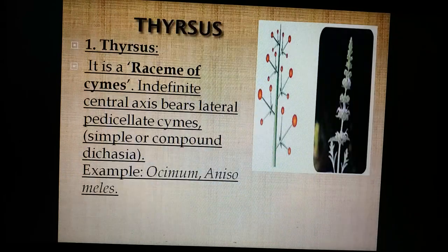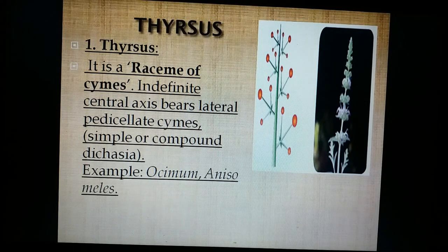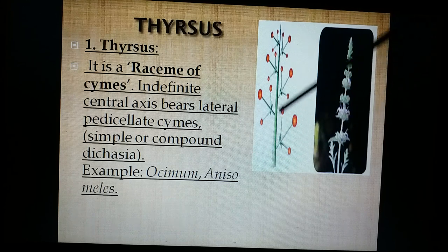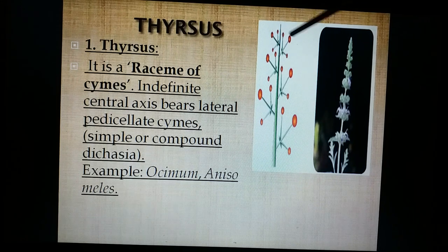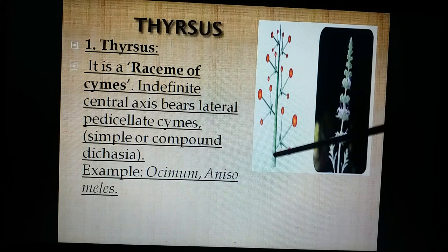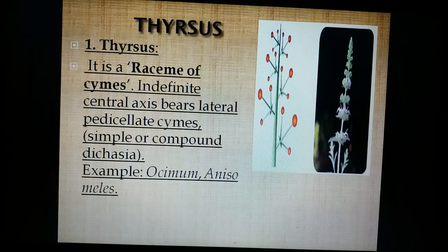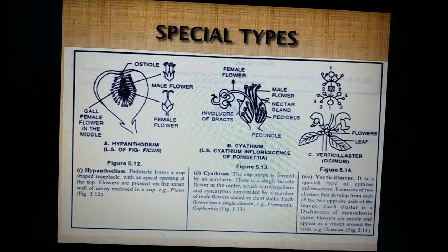Here is mixed inflorescence, otherwise called thyrsus. It has both racemose and cymose characters. The growth of the peduncle is indefinite (racemose character), branches are arranged in acropetal fashion — bigger at the base, smaller at the apex (racemose character) — but each branch resembles a simple cyme (cymose character). Thus having two racemose characters and one cymose character, it is a mixed inflorescence, characteristic of Ocimum, a member of Labiatae.